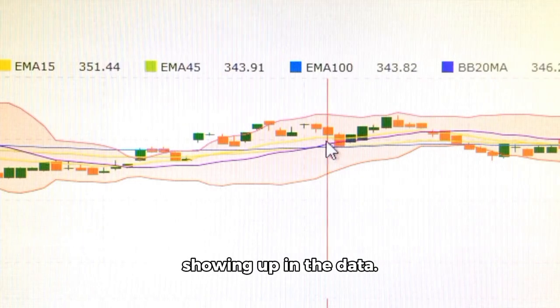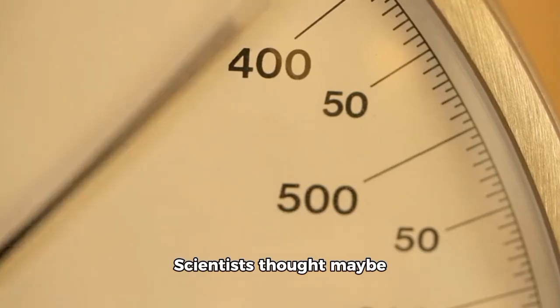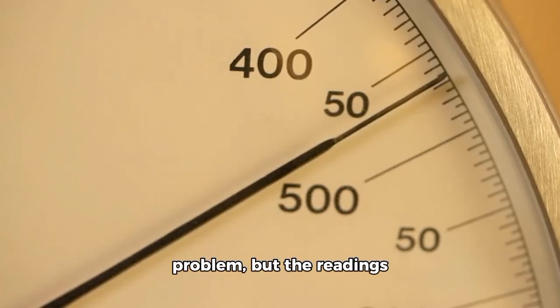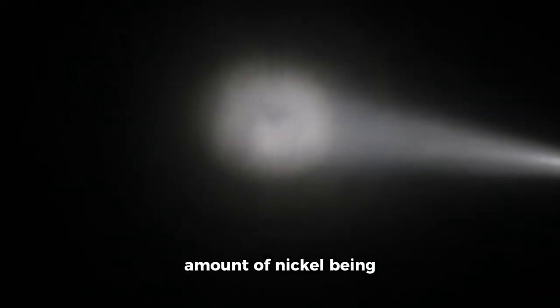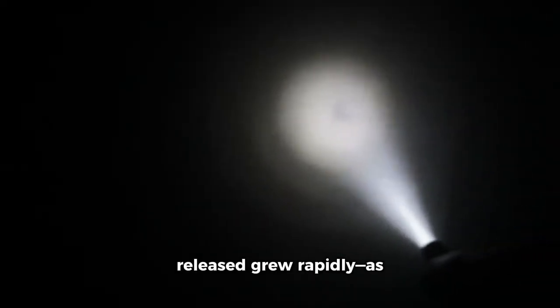But 3i Atlas broke that pattern. Only nickel was showing up in the data. Scientists thought maybe it was a measurement problem, but the readings were uniform across various instruments. And as the comet moved closer to the sun, the amount of nickel being released grew rapidly, as it should if sunlight was heating the surface.